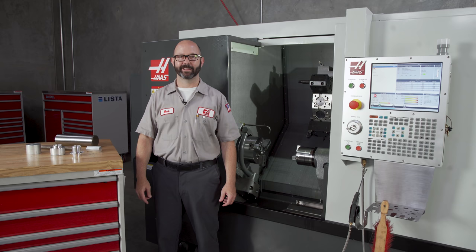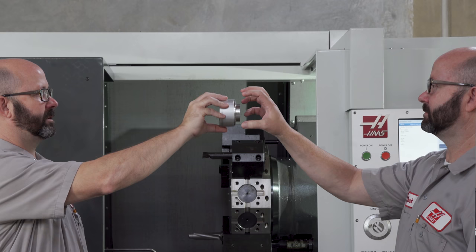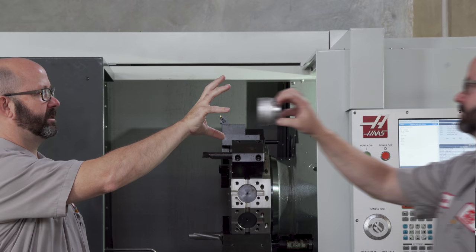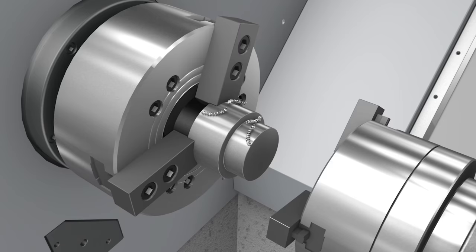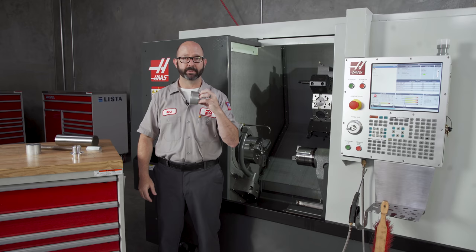Now for the fun part. We could hand off our part from the main to the secondary spindle with nothing turning, but if we do that, we're running the risk of capturing chips in between our jaws and the part as we clamp. So to avoid this...